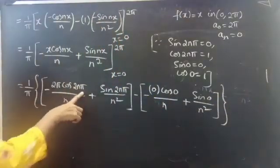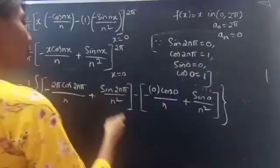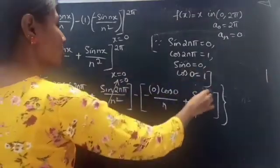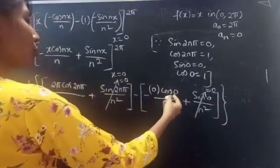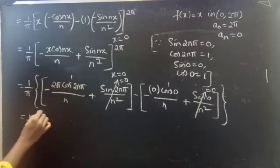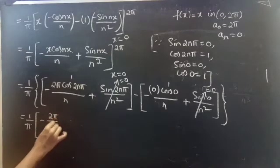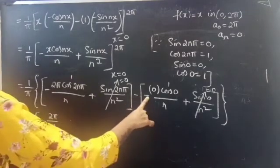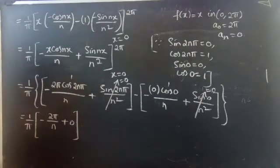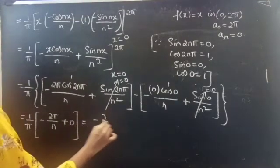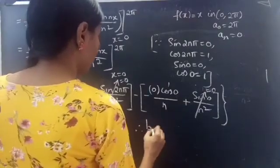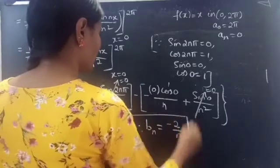Since cos(2nπ) equals 1 and sin(2nπ) equals 0, applying the lower limit (x = 0): the term with x vanishes and sin(0) equals 0. So the expression becomes 1 by π times [minus 2π by n plus 0 minus 0], which equals minus 2 by n. Therefore, bₙ equals minus 2 by n.